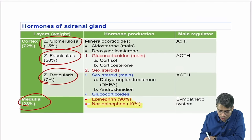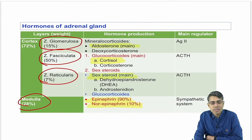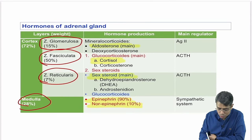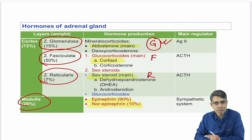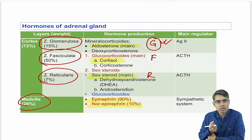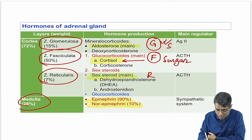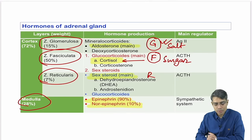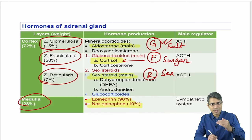Zona glomerulosa produces aldosterone (mineralocorticoid) — salt regulation. Zona fasciculata produces cortisol — sugar regulation. Zona reticularis produces sex steroids — sex regulation. Going from superficial to deep: glomerulosa, fasciculata, reticularis — salt, sugar, sex. Adrenal medulla produces epinephrine and norepinephrine.